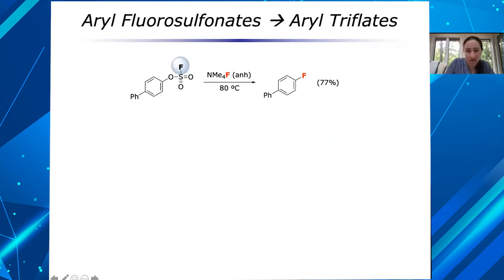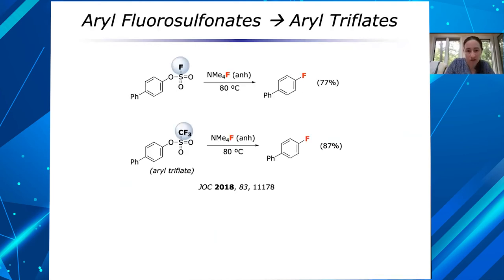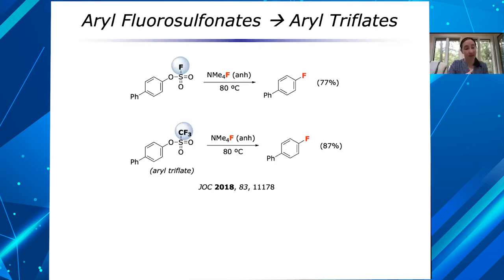In this JOC paper, we did a bunch of rate studies looking at different substituted aromatics, different fluorosulfonates, and different leaving groups to get a sense experimentally of the difference in rates of these kinds of substrates. I would refer you to those papers for the exact data.